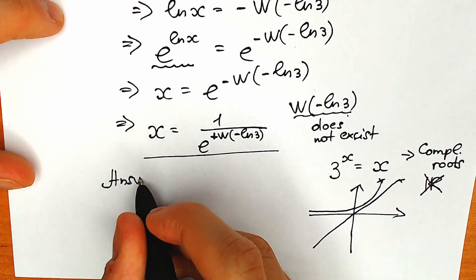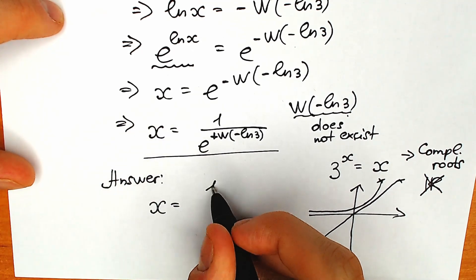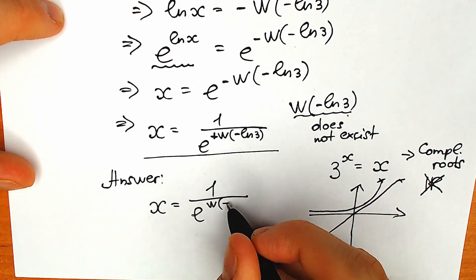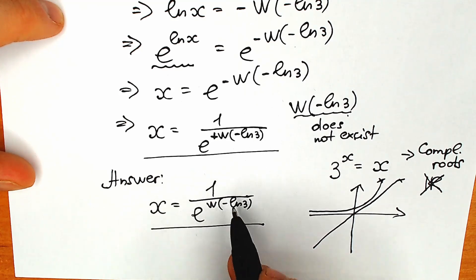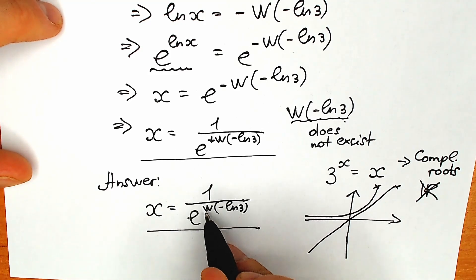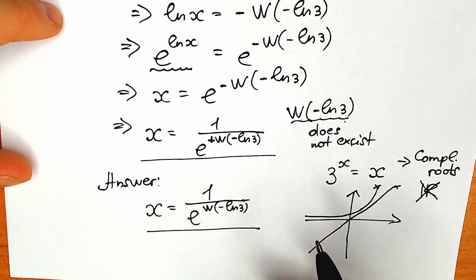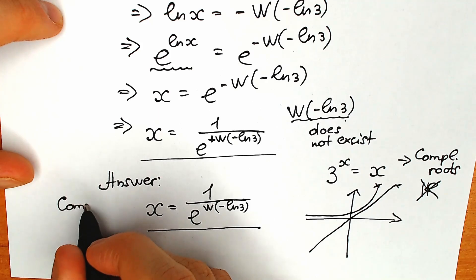So our final answer is: x equals 1 over e to the power Lambert W of minus natural log 3. This is a complex root. The Lambert W function of minus natural log 3 is a complex value — we cannot find it in terms of real numbers. Therefore, the power is complex, the denominator is complex, and this is our complex root.